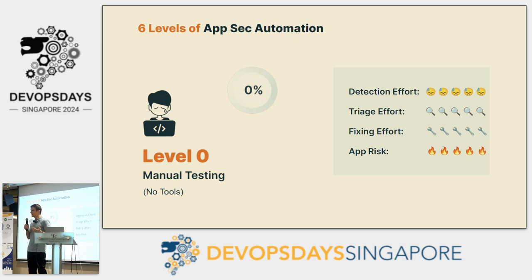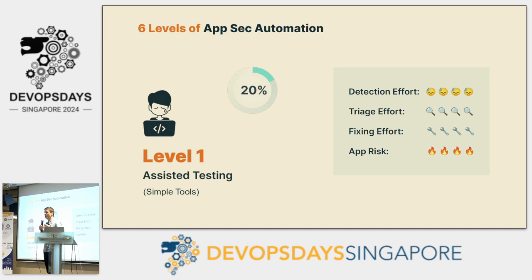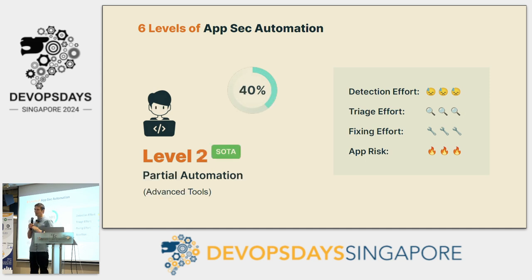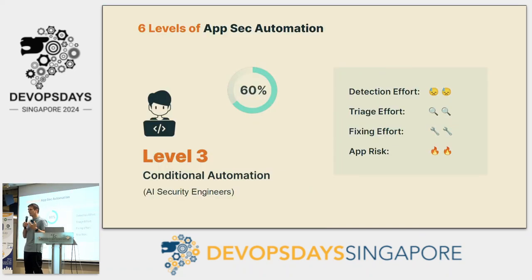I'd like to introduce the six levers of application security automation. Level zero: manual review with no tools in place — really fun but doesn't scale. Level one: you have some tools available, take source code, run an on-demand scan, export results to PDF, and give them to developers. You've probably experienced that it's not great. Level two is where we are right now — state of the art. Best-in-class vulnerability tools integrated into the pipeline, scanning every code change and giving developers ongoing feedback in their workflow. The problem is these tools are not smart; they don't understand the logic of the application. We as humans still have to look at all the vulnerabilities and manually triage them and find fixes. That's where level three comes in: the AI security engineers.